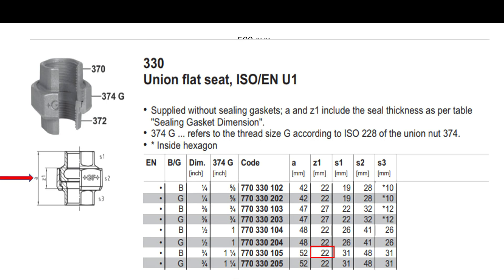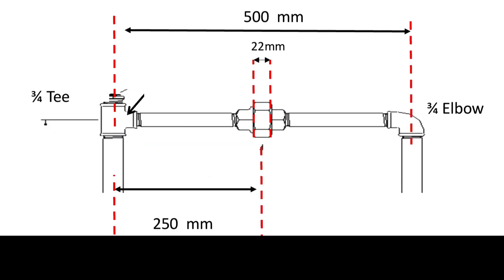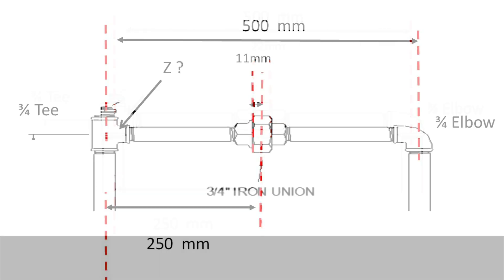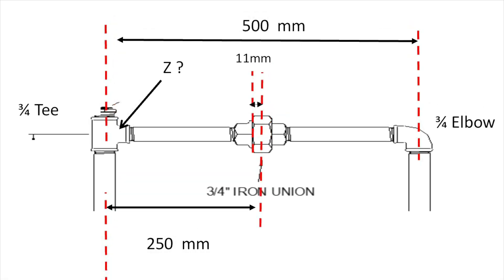Right, let's find the Z dimension for this union, which equals 22mm. Right, so let's take off half of that. So 250 minus 11 equals 239mm.